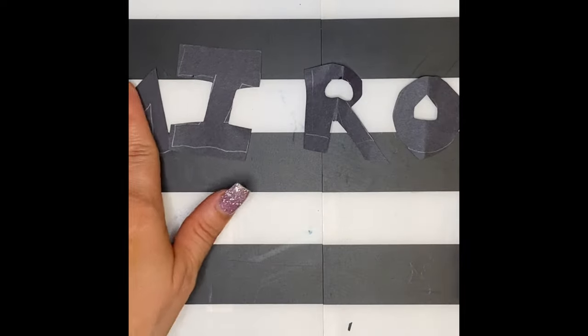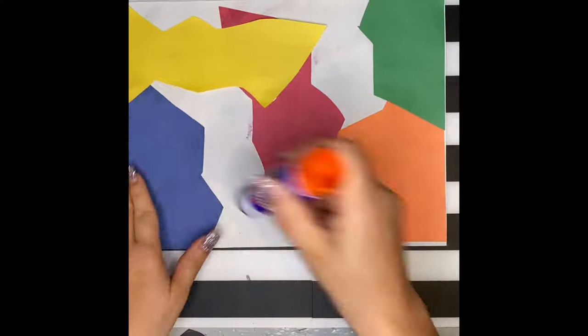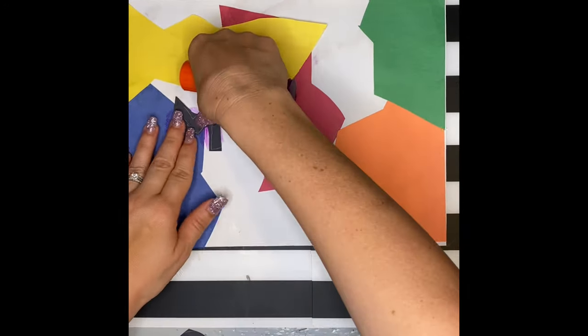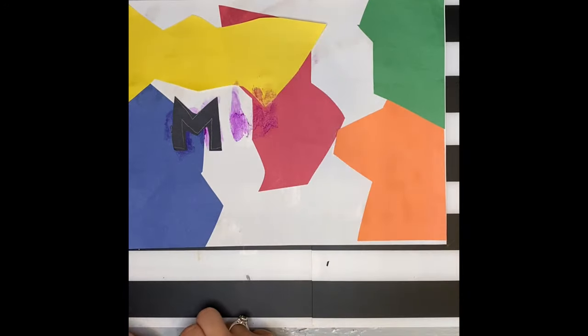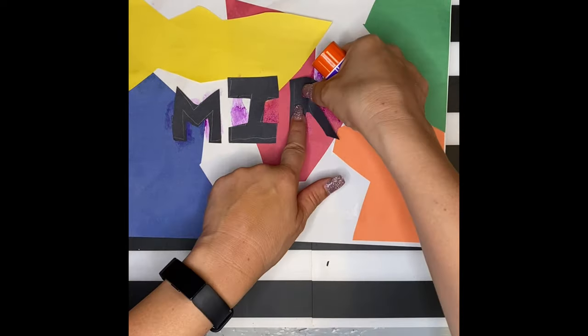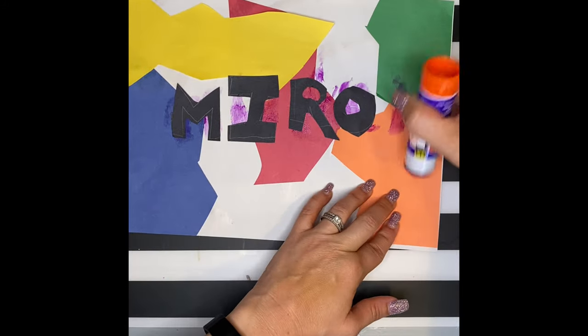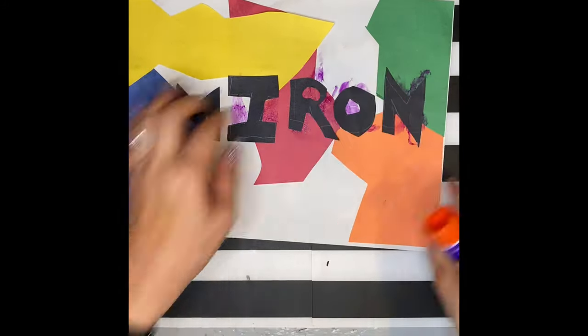Myron! Next, bring back your collage and begin gluing down your letters. One by one, add your letters onto your collage. If glue goes in other places, it's okay, because the glue will dry clear.